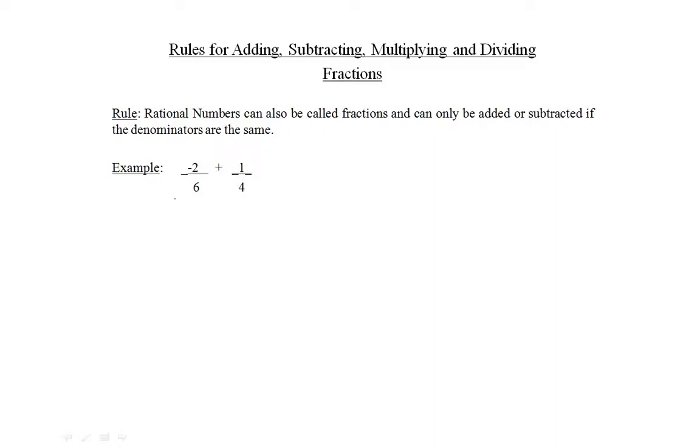Let's look at an example: negative 2 over 6 plus 1 over 4. Step one is to find the lowest common denominator that 6 and 4 will divide into. The lowest common denominator is 12.